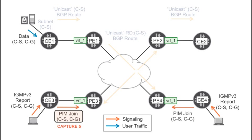What's the upstream interface? It's the one pointing to the source, as dictated by unicast routing. Once the PIM joins reach PE3 and PE4, the multicast signaling stops there, for the moment.